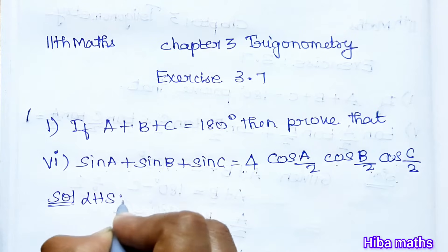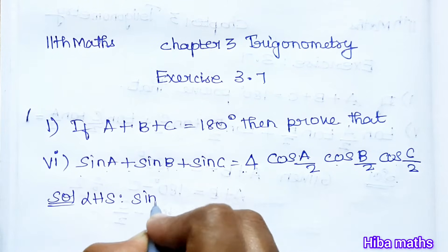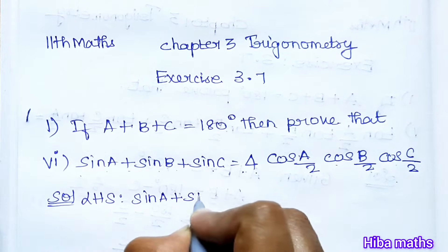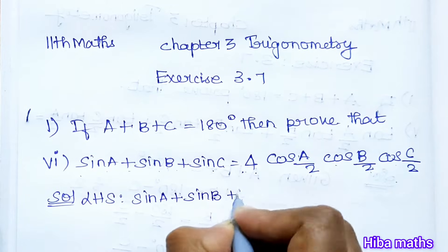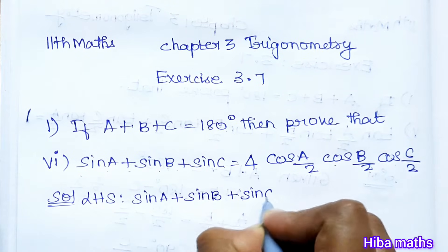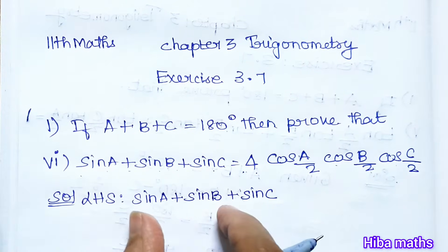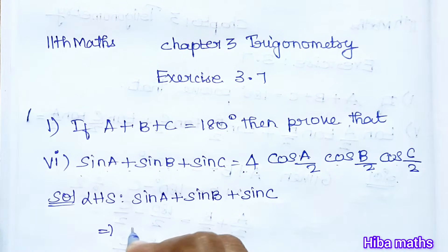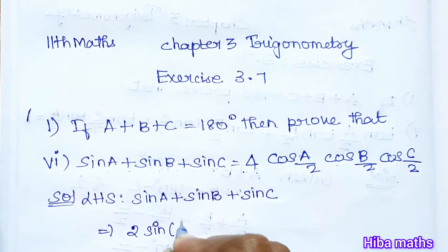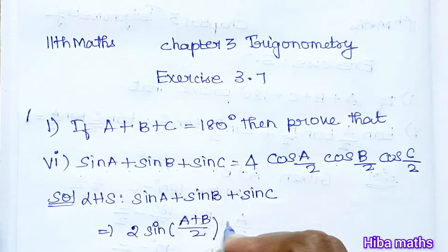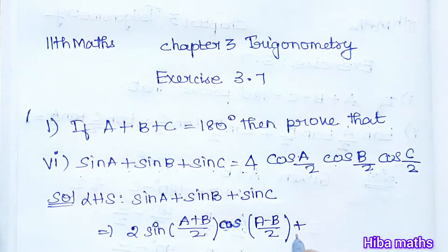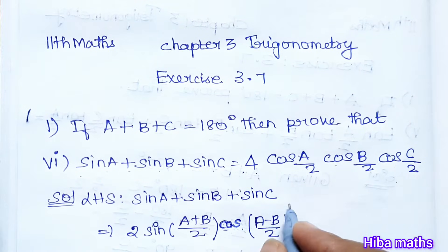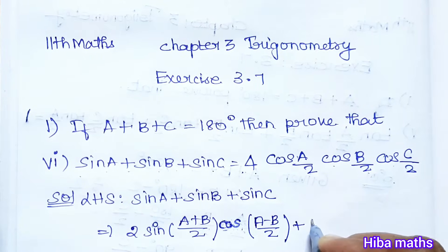In the solution, the LHS part is sin a plus sin b plus sin c. Now sin a plus sin b uses the sum-to-product formula: sin a plus sin b equals 2 · sin((a+b)/2) · cos((a−b)/2).